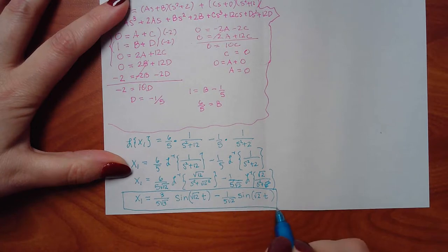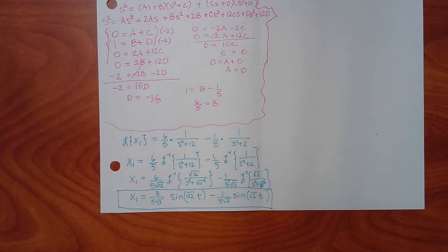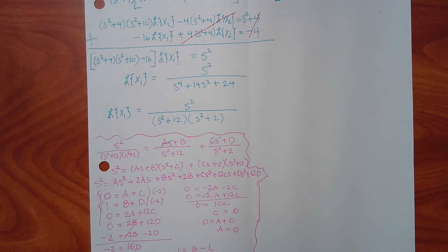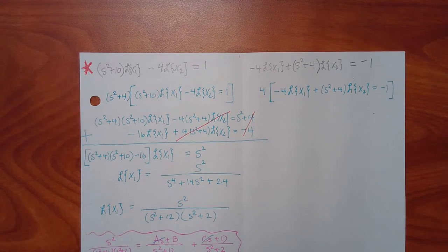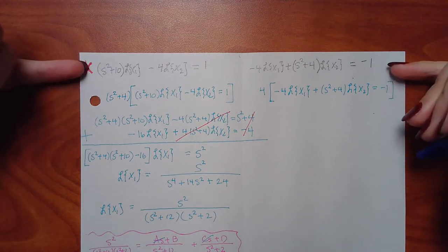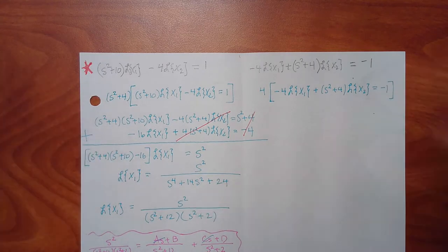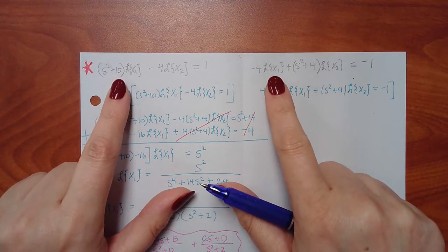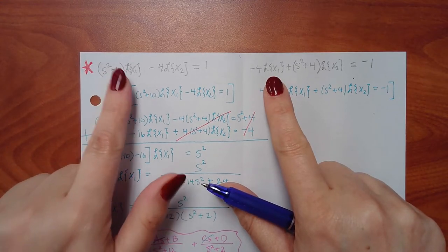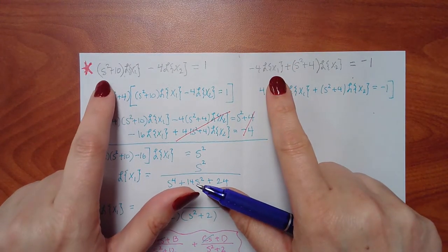That's half the answer — I figured out what X1 needs to be. Now I still have the whole other side of my paper because I'm going to do the whole thing all over again, but now we focus on X2. I'm going to go back to the beginning — back to where I had the L{X1}s and L{X2}s side by side with everything else on the other sides.